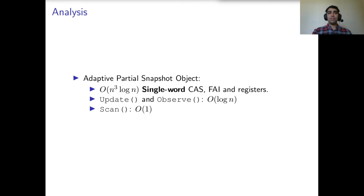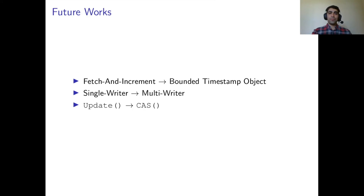In conclusion, we implemented an adaptive partial snapshot object using a bounded number of single-word compare-and-swap, fetch-and-increment, and registers. The time complexity of update and observe is dominated by their operation on a predecessor object. Since each predecessor object has at most order of n pairs, the time complexity of update and observe is order of log n, and the time complexity of scan is order of 1. The first step in future work is to bound the memory by replacing the fetch-and-increment object with a bounded timestamp object. The next step is to change the algorithm from single-writer to multi-writer. And at last, we can further extend this object to support snapshots of stronger primitives such as compare-and-swap.